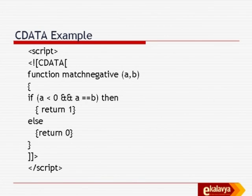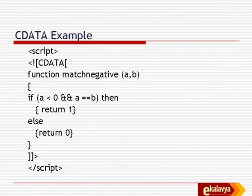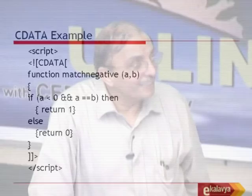Here is an example. Within the script and slash script element, there is a CData section. The starting CData section marker is written, followed by the entire C program code: function match(a, b) - if a less than 0 and a equals b, return 1, else return 0 - and then the closing CData marker. This means the whole thing is a script. I can give an attribute to that script saying programming language C, so that attribute could be interpreted by the other system to say what it receives is C programming code - compile it and run it for whatever purpose.